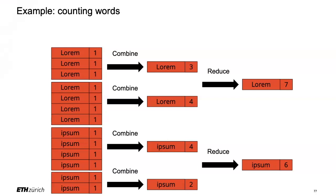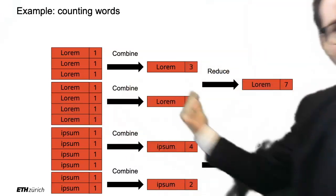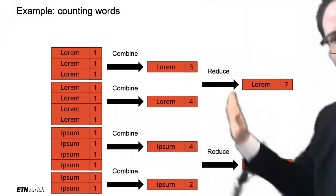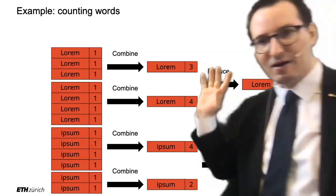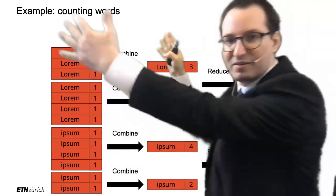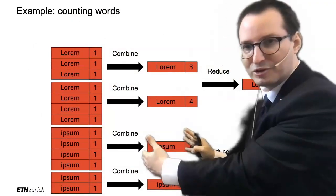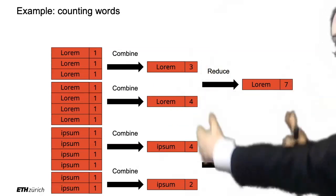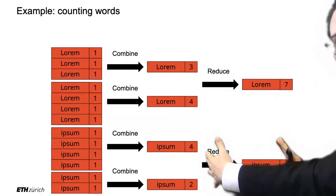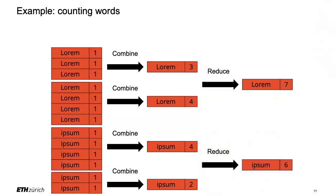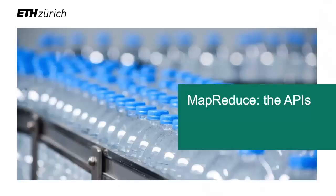What's very important to understand is that mathematically you can combine any number of times without changing the results. Physically, the combine happens in the map phase on the original machines before shuffling, and the reduce phase happens on the other side. That's the combine optimization.